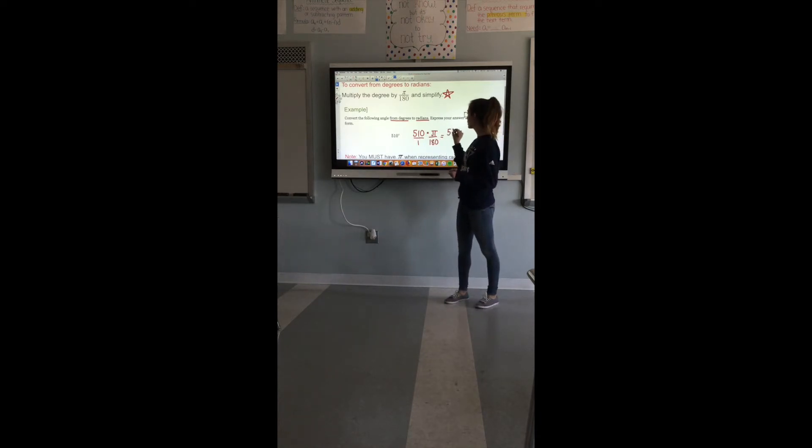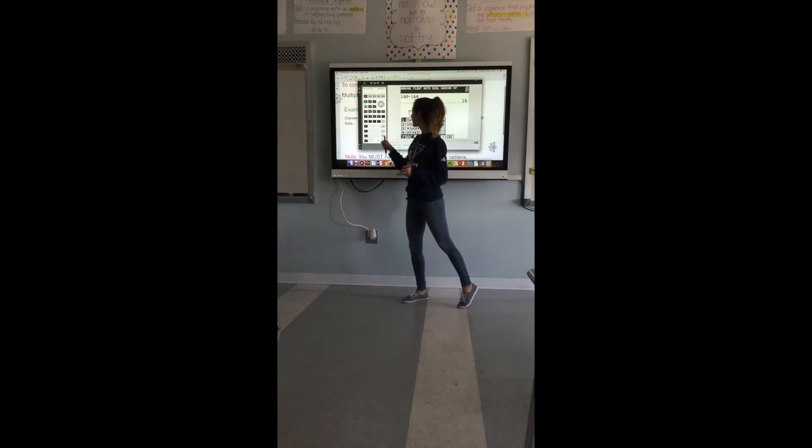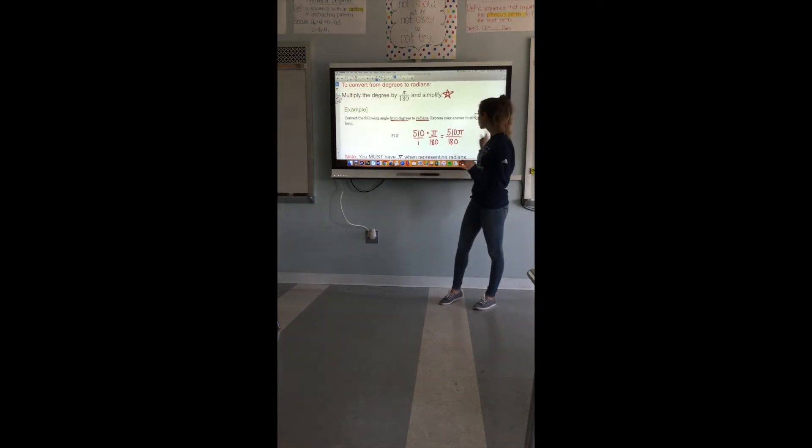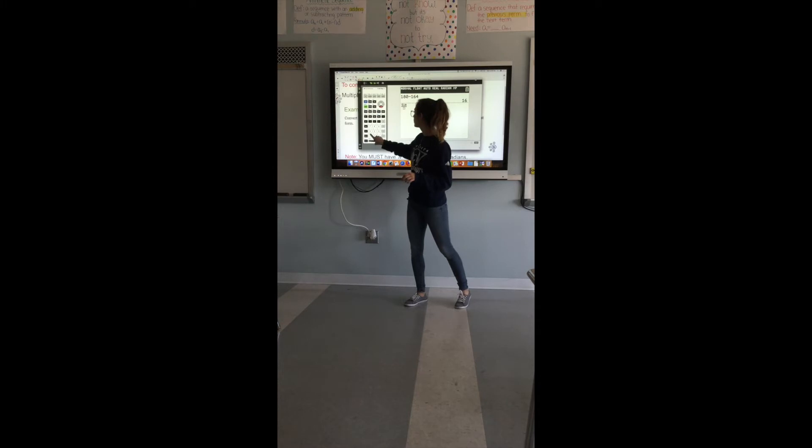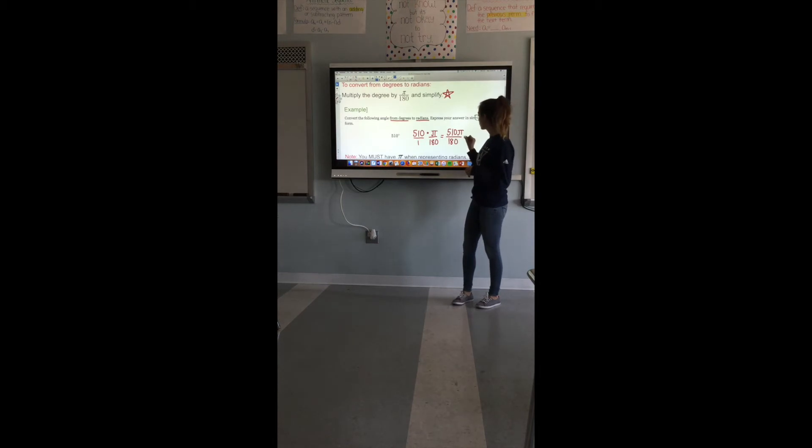When you do that you can think of this as 510 over 1 times pi over 180. Now you do have to simplify. If you would like to use a calculator you can alpha y equals enter. You are not typing pi in the calculator, you are only typing in your numbers so we are typing in 510 divided by 180. When you do that we get 17 over 6 so this actually simplifies to 17 pi over 6. Now this is in radians.